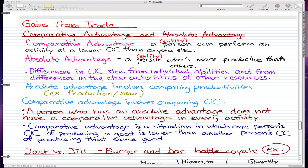Gains from trade. We're going to start off with comparative advantage and absolute advantage. Comparative advantage is where a person can perform an activity at a lower opportunity cost than anyone else, and this doesn't have to be a person—it can be any sort of entity, for example, a business or a country.